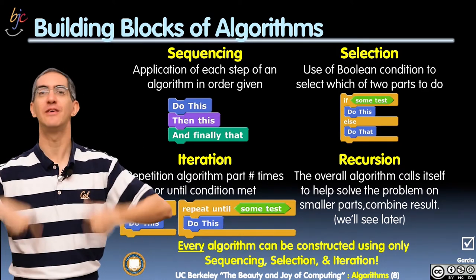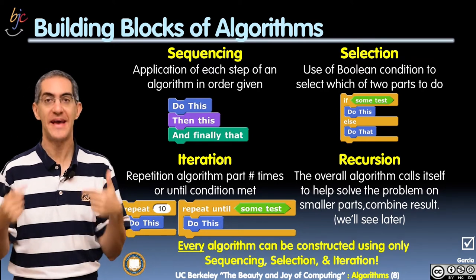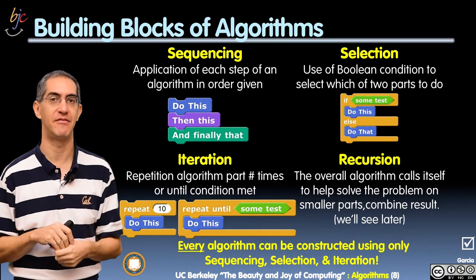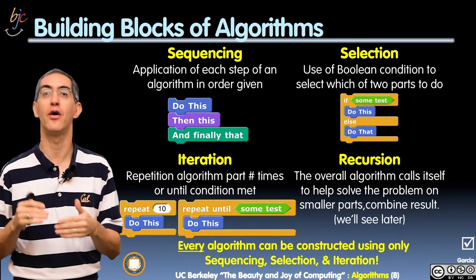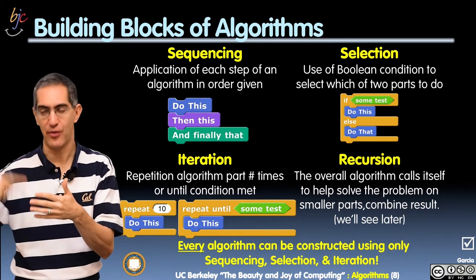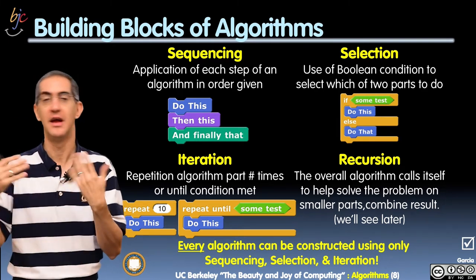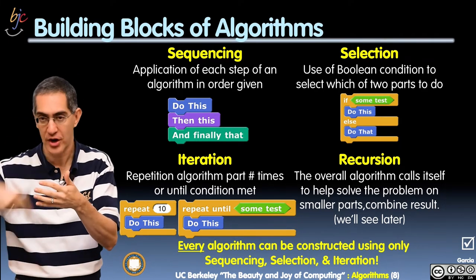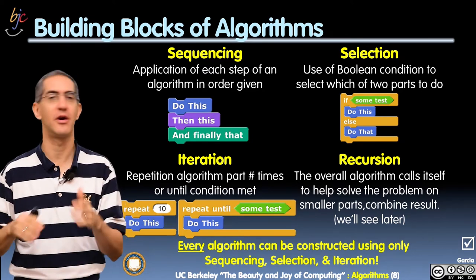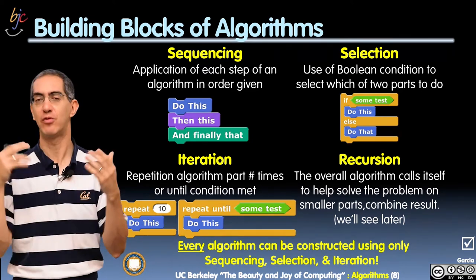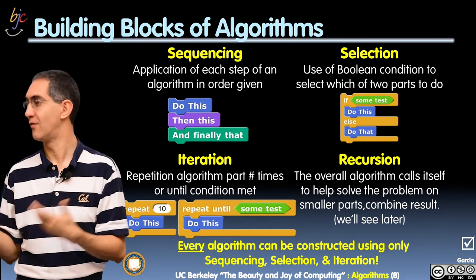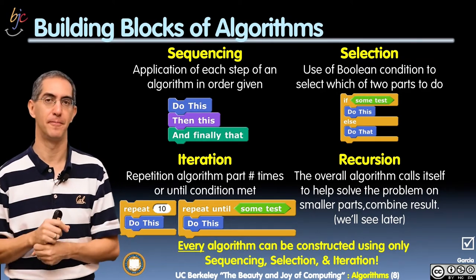Iteration means doing something over and over, based on either a set number of times — like repeat 10 — or based on a test that changes throughout the process, like repeat until I find the magic card, then turn to the next card. Recursion, which we've mentioned before, is when the definition of a function uses the function itself to solve the problem on a smaller part of the problem.